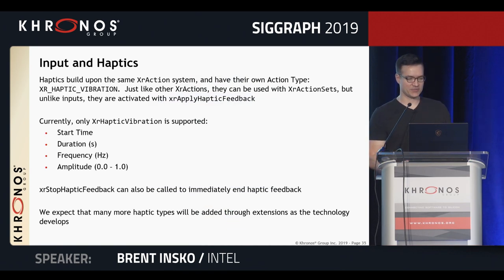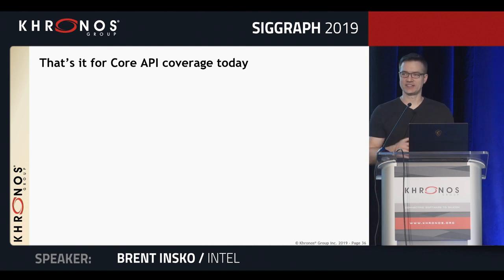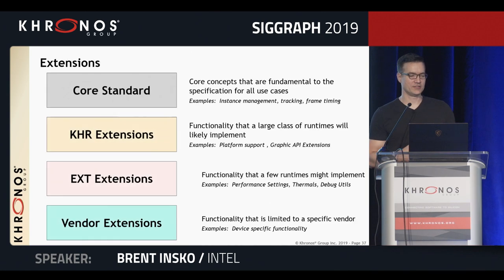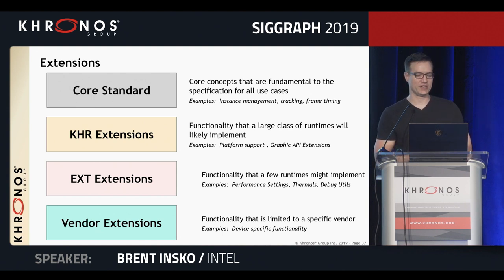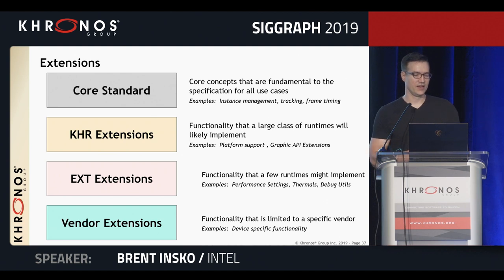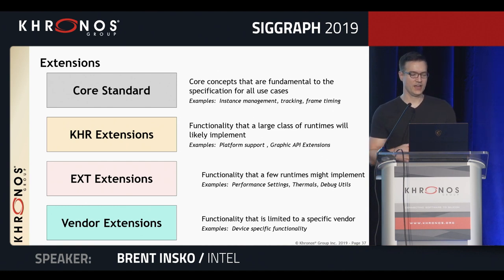We also have basics on haptics — starting and stopping frequency and other controls around haptic feedback. That's it for the core API. I do want to talk about extensibility: this is an emerging market, so we wanted to build around extensibility following the standard Khronos extensibility framework. We have the core standard, KHR extensions expected to be supported by the majority of runtimes, multi-vendor extensions where companies expose features common between multiple runtimes, and vendor-specific extensions for particular features a vendor wants to expose.